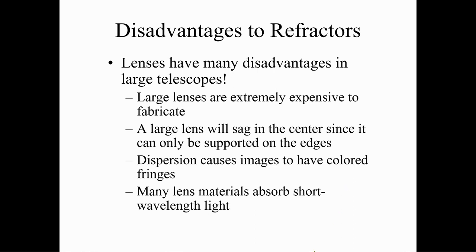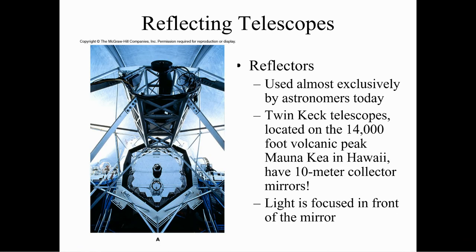Reflecting telescopes use mirrors. The nice thing about a mirror is it can be supported from any place — it doesn't have to be around the edge. Here's a person next to a huge mirror that could be supported by nothing more than a simple post behind it. So reflectors are used almost exclusively by astronomers today.